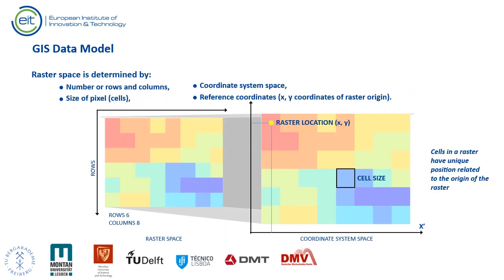The raster space is determined by the number of rows and columns in the array and by the size of the cell. The location of each cell in a coordinate system is determined based on these known values and by the coordinates of the reference cell, usually the lower or upper left corner. When information is presented in raster form, the detail about its variation within a cell is lost — a cell is given a single value, often based on the largest share of the cell's area or the central point.